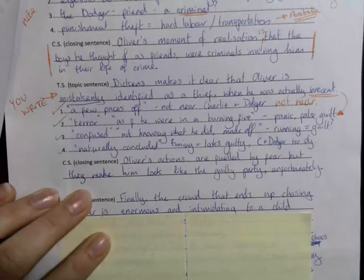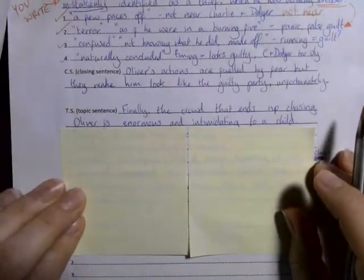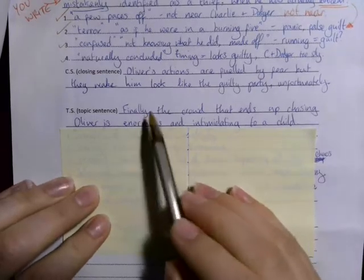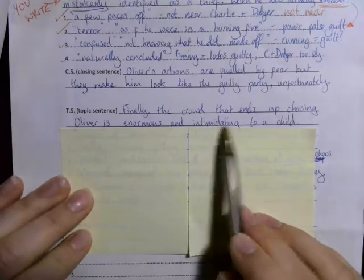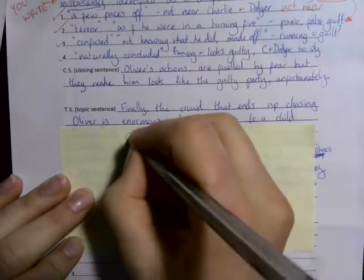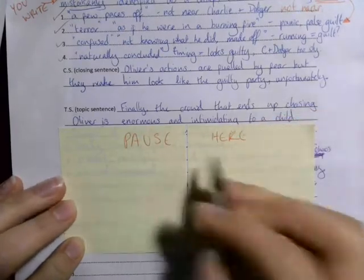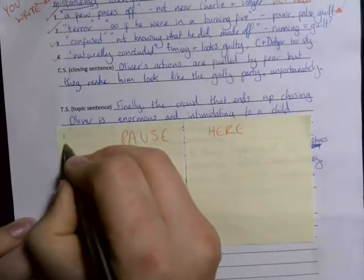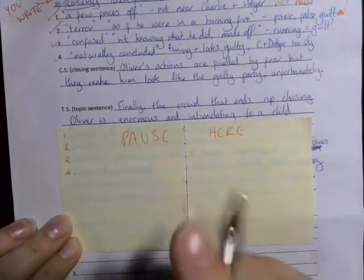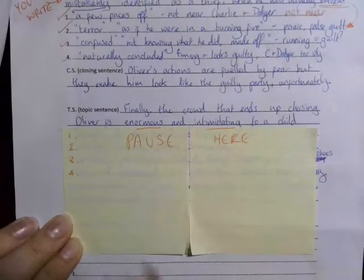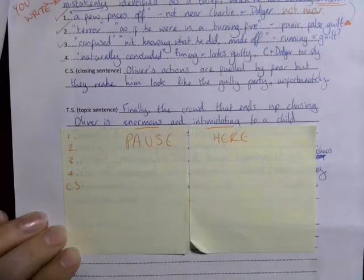This time the topic is: 'Finally the crowd that ends up chasing Oliver is enormous and intimidating to a child.' Again I'd like you to pause here before we go to the answers. So you want four things that are going to show that the crowd is enormous, is big and scary, before coming to a closing sentence. Pause here and have a go.